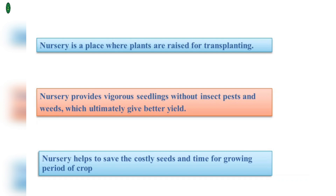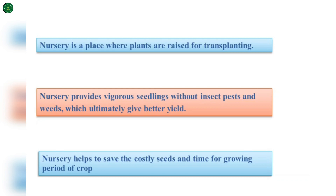From the nursery we get healthy seedlings, so there are no insect pests and weeds. Ultimately, these healthy seedlings after transplanting give us good and better yield. Nursery helps to save costly seeds and time for the growing period of the crop.